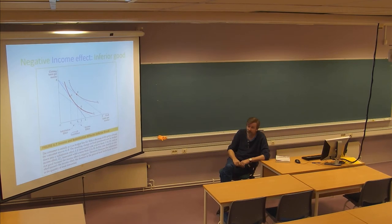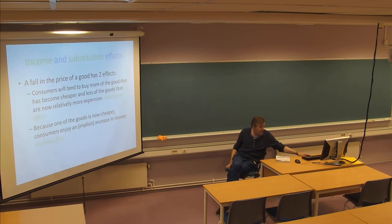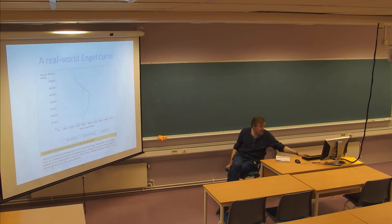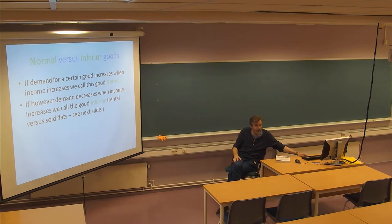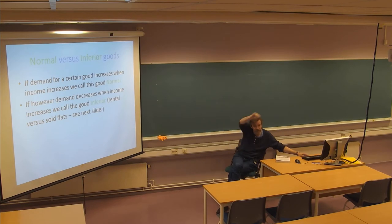We talked about inferior goods yesterday with the Engel curve — rented flats, for example, where people got richer and bought less. That is exactly the situation here: a negative income effect, and the Engel curve flips in the other direction.